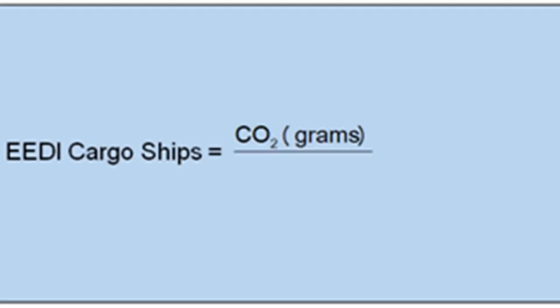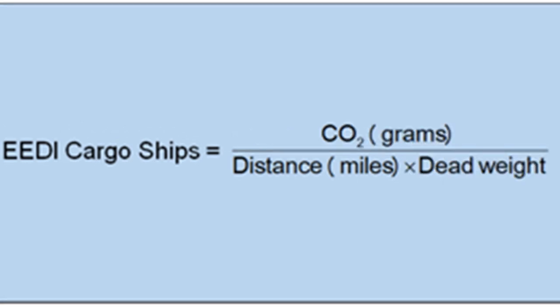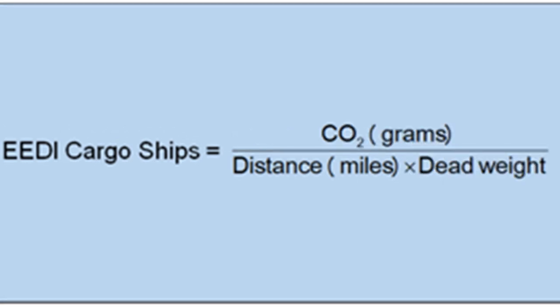Then EEDI — what is EEDI? Energy Efficiency Design Index. It is the net amount of CO2 that is consumed, divided by the dead weight and the distance travelled in nautical miles. So what we get is grams of CO2 per nautical mile per ton. That is EEDI, Energy Efficiency Design Index.